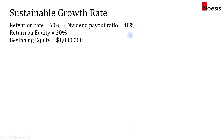We'll assume that the retention rate is 60%, which means the dividend payout ratio is 40%. The return on equity is 20% on any new investments, and we'll start with a beginning equity of $1 million.